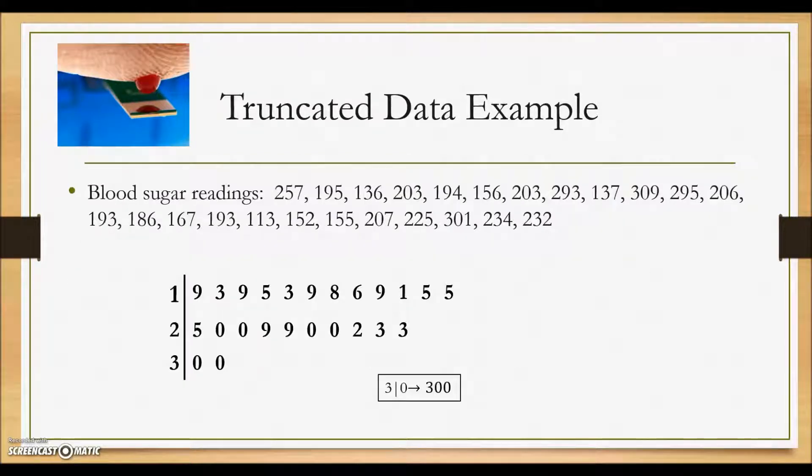The result for these blood sugar readings is the stem plot shown here. And the key of 3 stem with leaf of 0 was the original 300 value. Now this would have, most likely, come from any of our 300 readings.